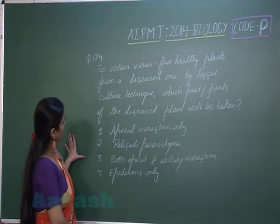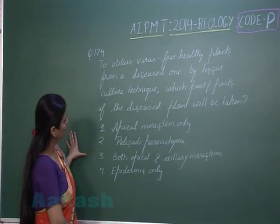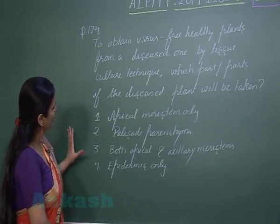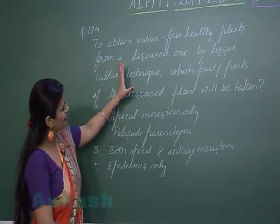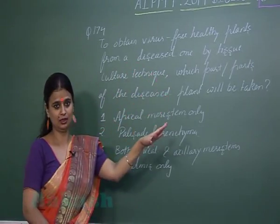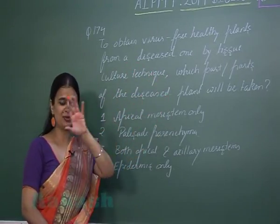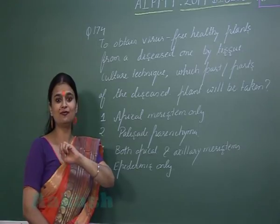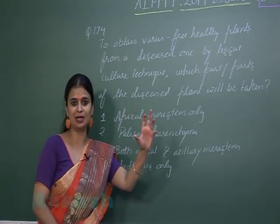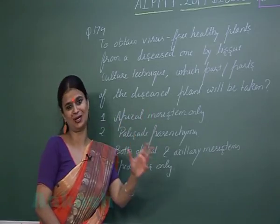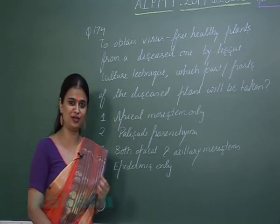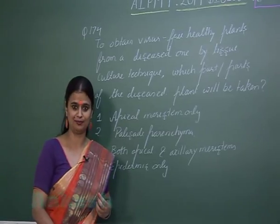Question number 174: By utilizing which part of the plant can we obtain virus-free healthy plants from a diseased one? From a diseased plant, we can form a virus-free or healthy plant by using which part of the plant? This can be done with the help of meristem.